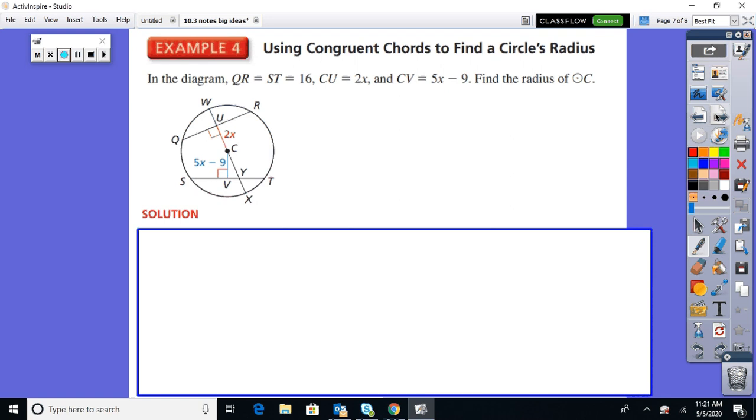So I'll show you right here in example four. Last example for this section today. In the diagram, QR equals ST. So the chords are the same, equals 16. So look what I have here. I got the perpendicular. So I know that that's getting cut in half. That's getting cut in half. Then they tell me it's 16. So I know that all these little pieces are 8s all the way around.